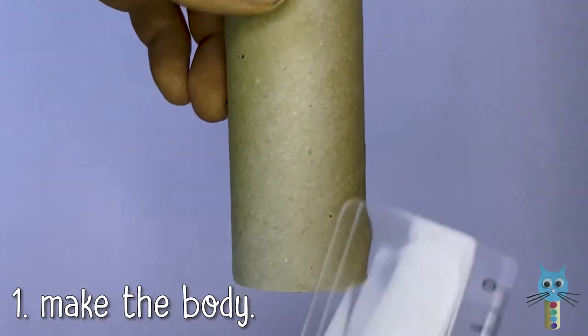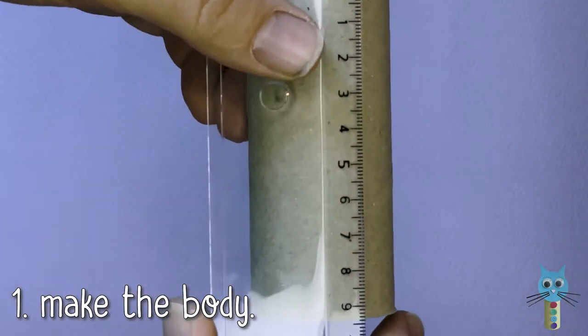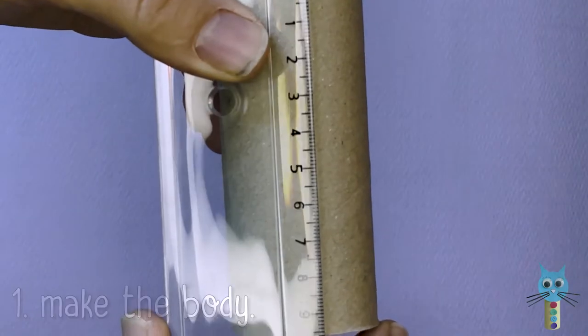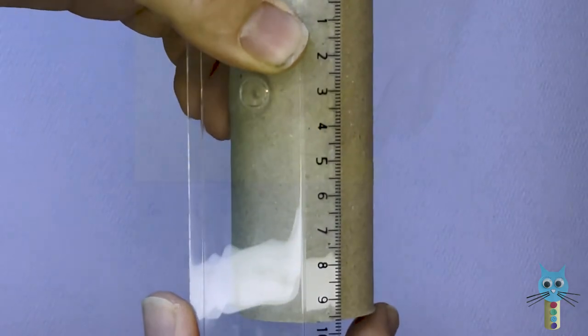Take a cardboard tube and measure its length. This one is about 9.6cm.